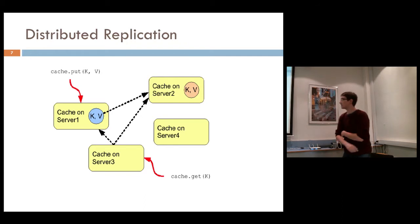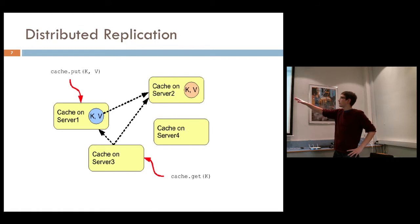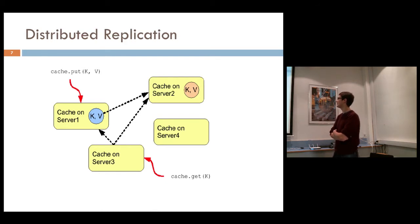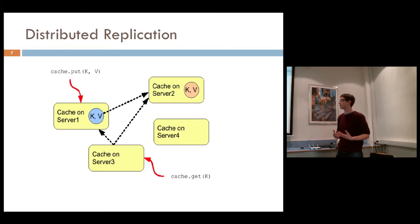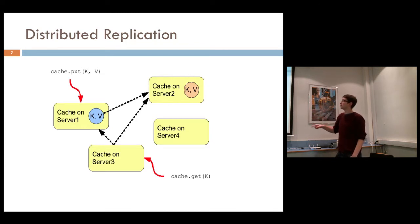This diagram shows a small InfiniSpan cluster with four nodes. On server one we have the primary replica of key K, and on server two we have the backup replica. If you perform a get operation from server one, you have the data locally and it returns immediately. However, if you perform a get from server three, InfiniSpan makes a remote procedure call to servers one and two, and whichever responds fastest is returned to the user.